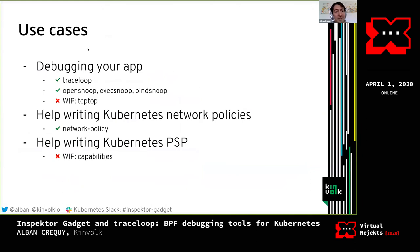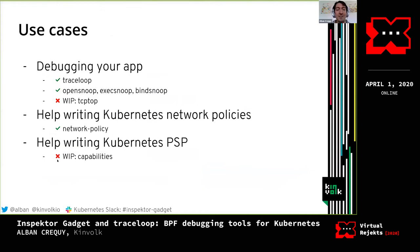Some example use cases for the different gadgets in Inspector Gadget: some allow you to debug your application, like TraceLoop and OpenSnoop. Some help you write network policies, like the network policy advisor gadget. And some are still in progress but not completely ready to use — these will help you write pod security policies with the right capabilities in your pods.